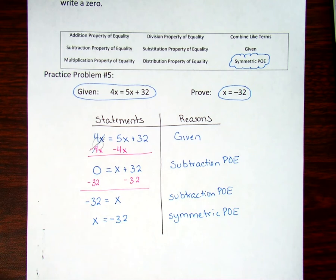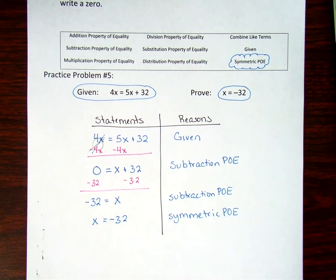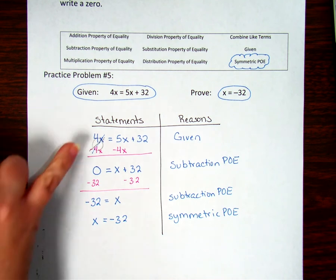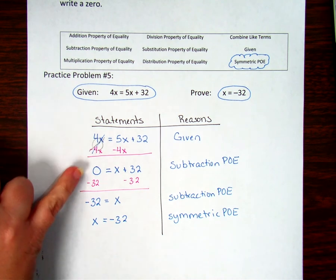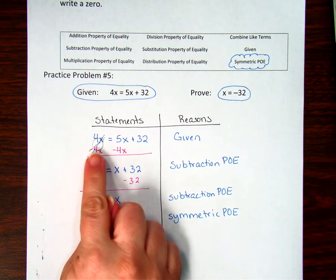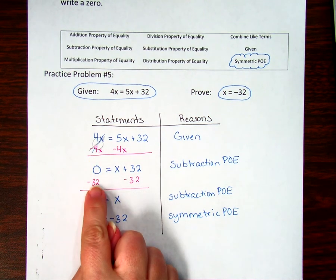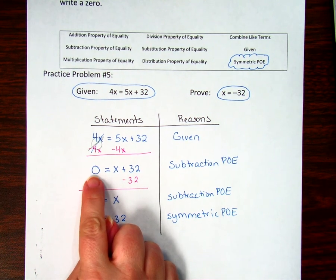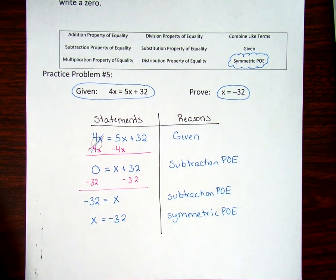So we looked at our new property, where we were just switching things from one side of the equals to the other. And we need to watch out for this error here, where sometimes we forget that it doesn't just cancel out. It actually becomes a zero. But on occasion, if everything goes away on one side of the equals, then we do need to make sure that we write that.